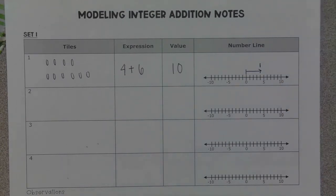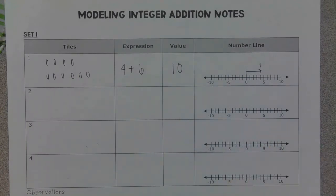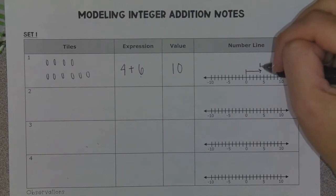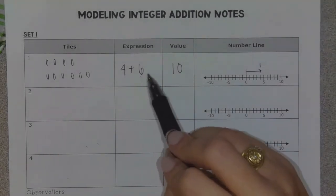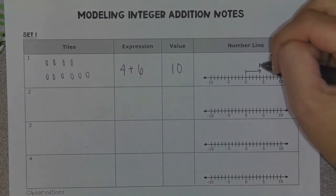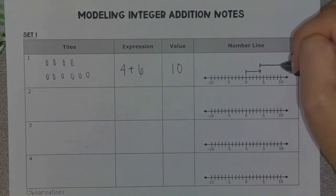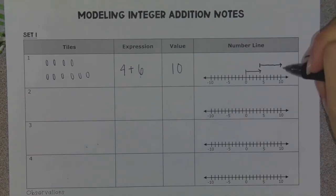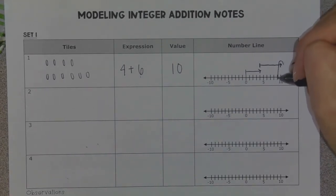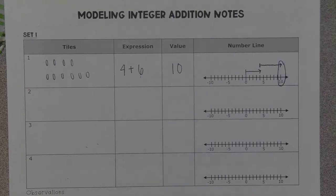From that positive four, I'm going to draw another straight line right above it to show the start of my next number. Then I'm going to move six spaces to the right since my next number is positive six — I'm not going to the number six, but I'm moving six spaces to the right. Wherever that second arrow lands, that is the value of my expression. That second arrow landed at 10, so I have a value of 10.